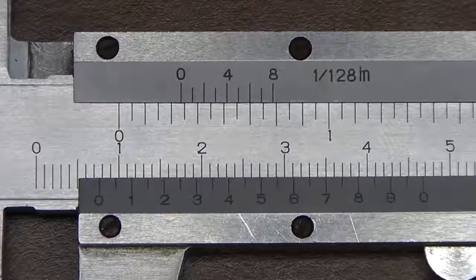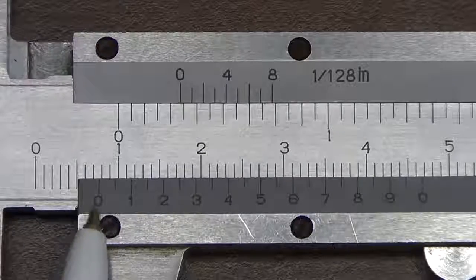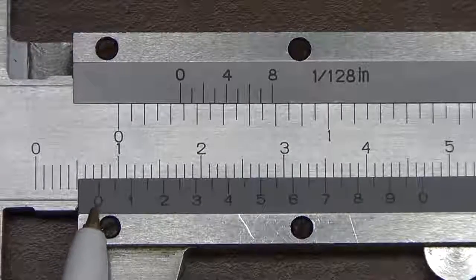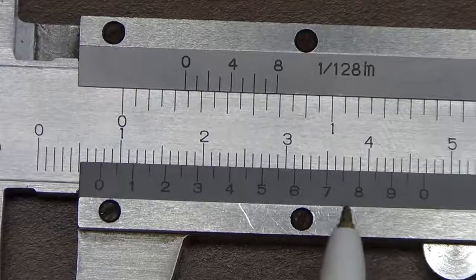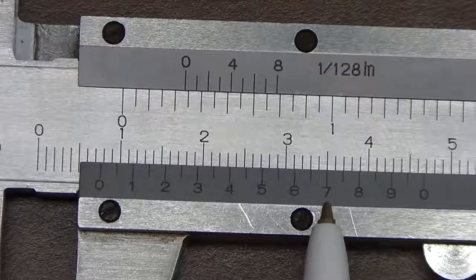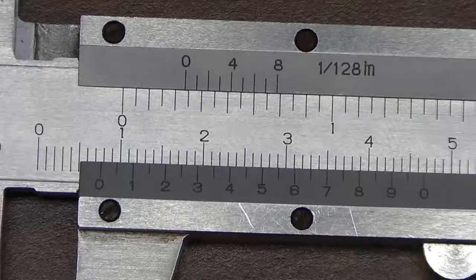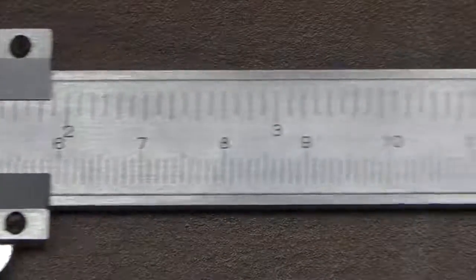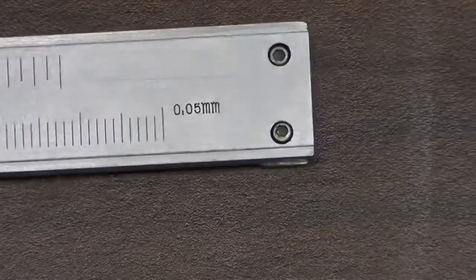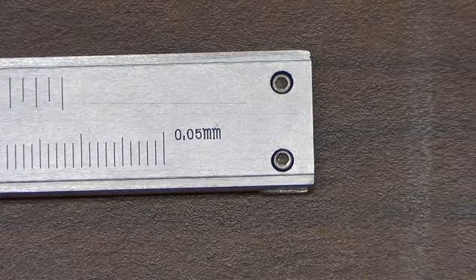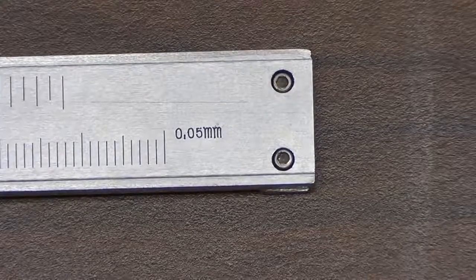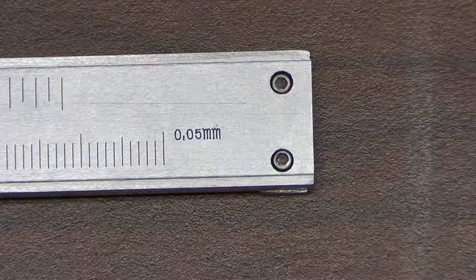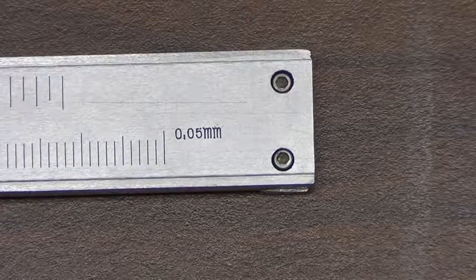Now the question is how do we combine this 0.7 centimeter measurement on the major scale with the 7 mark on the minor scale. The answer to that is over on the far side of our caliper there's a little marking that says 0.05 millimeters. This tells us the smallest unit of measurement for the caliper.